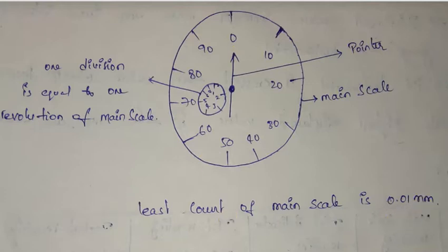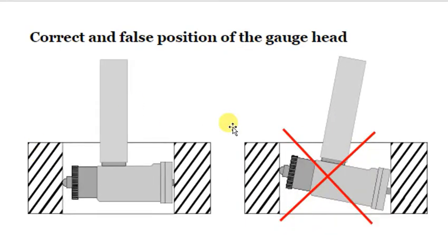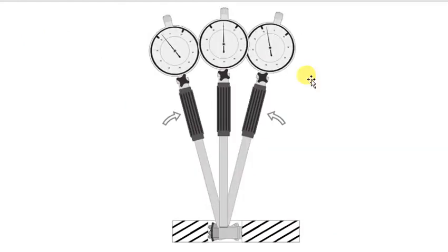Here next to this is the false and correct positions of the gauge head. This is the correct position and this is the false position. If we keep our gauge like this we cannot get the correct results. This is the correct position. Though we make any horizontal positions it is impossible to ensure a horizontal alignment of dial gauge manually.